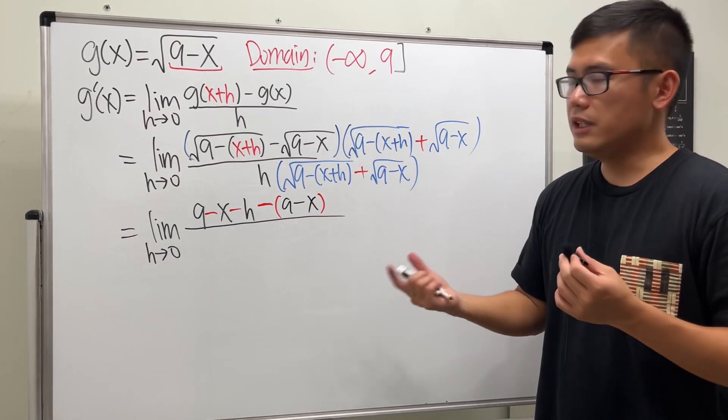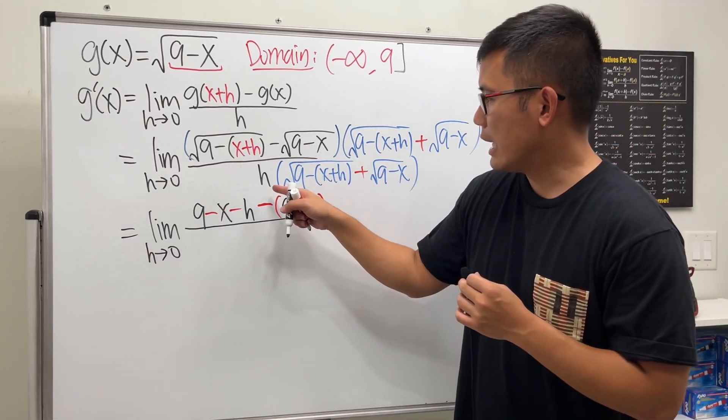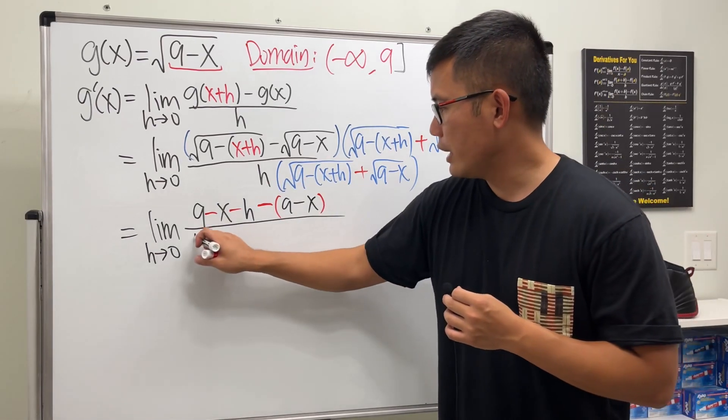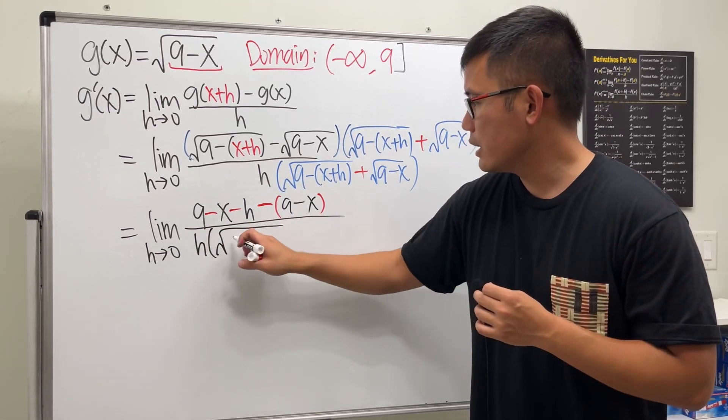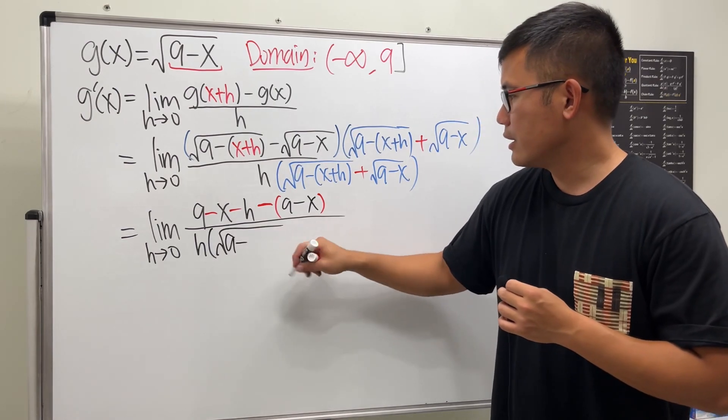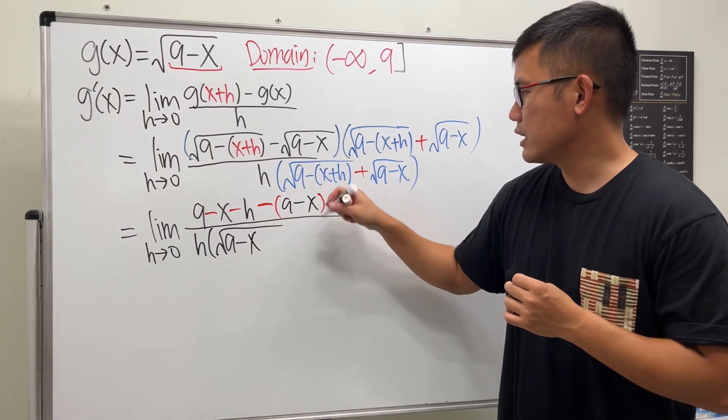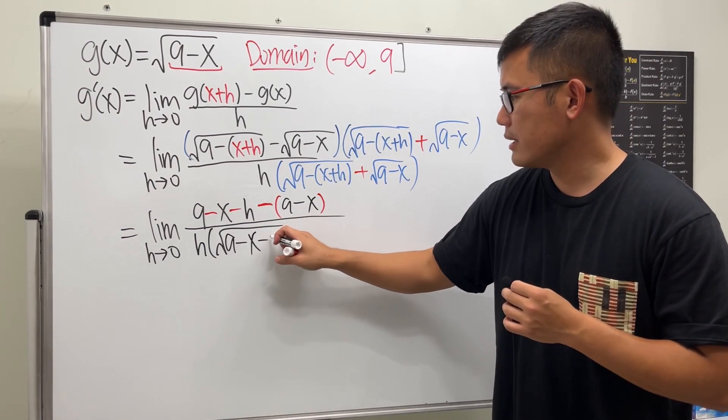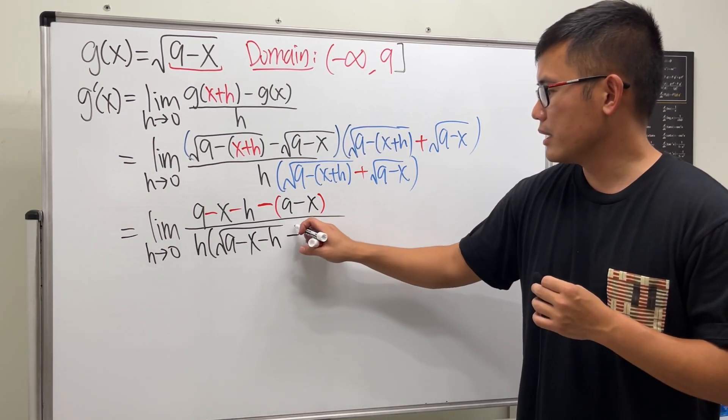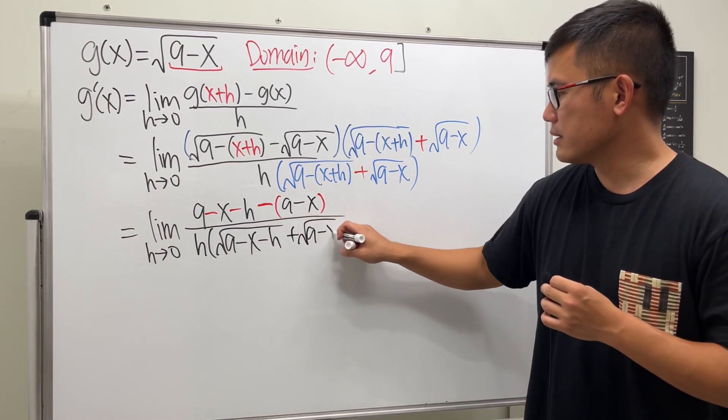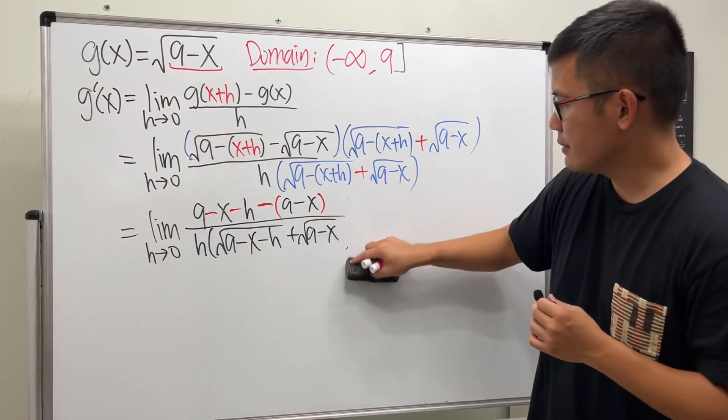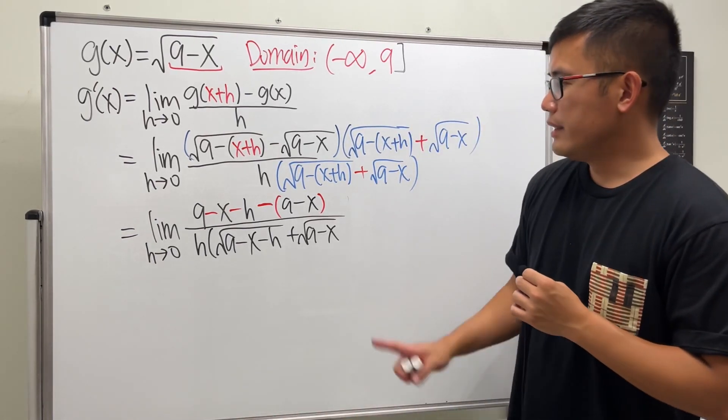And then for the bottom, just leave it. We are going to have h times the square root 9 minus x plus h. So I'll just keep it as minus x and then minus h, and then plus square root of 9 minus x.